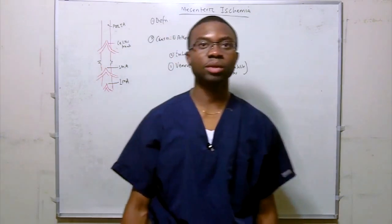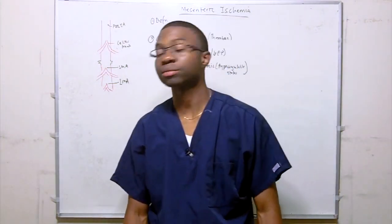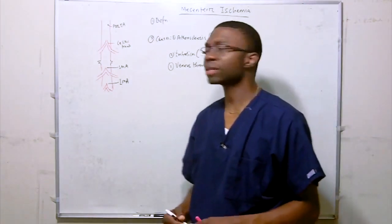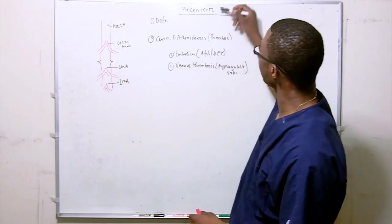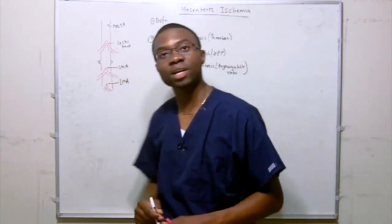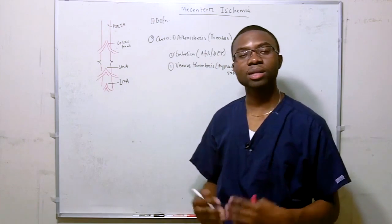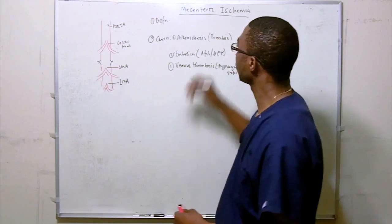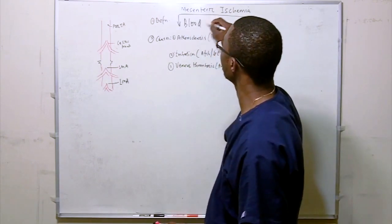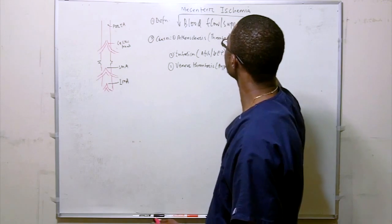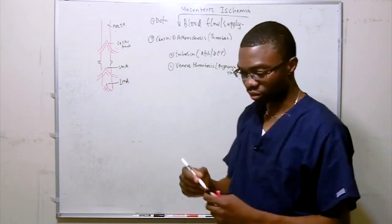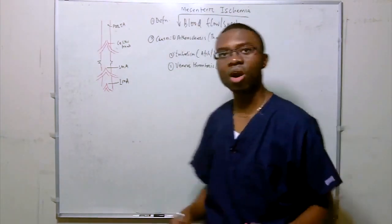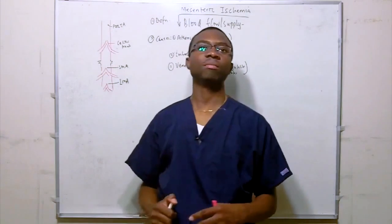The next topic we're going to be talking about is mesenteric ischemia. Let's start with the definition. What is mesenteric ischemia? Let's break the word into two: mesenteric, talking about the mesenteric arteries inside your GI tract, and ischemia, which means decreased blood flow or blood supply. So ischemia to the mesenteric arteries — this is what's causing mesenteric ischemia.